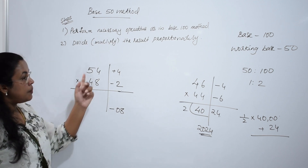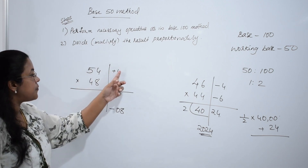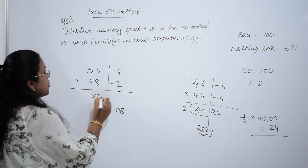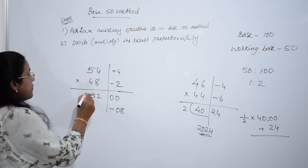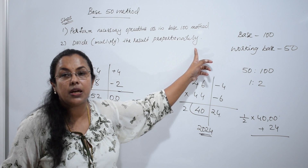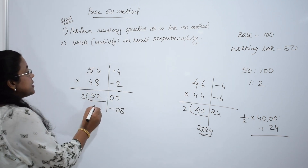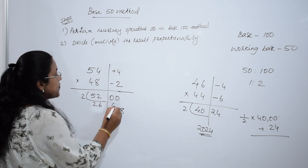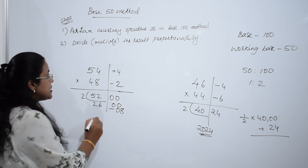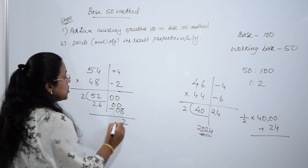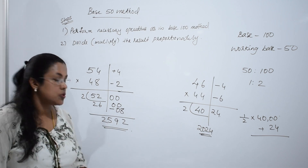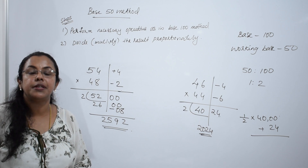Now perform the operation diagonally: 48 plus 4 or 54 minus 2 — both are 52. This is 52 hundred. Divide it by 2: the next step is to divide proportionately. 52 divided by 2 — 2 twos are 4, 2 sixes are 12, giving 2600. We have to subtract 8 from 2600. So the final answer is 2592.